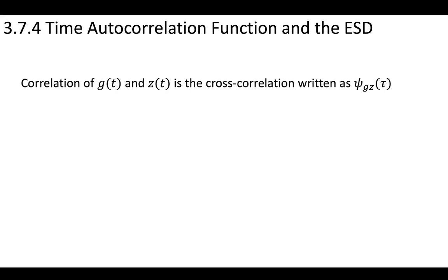Let's consider the time autocorrelation function and its relationship to the energy spectral density. The correlation of a signal in time, g(t), with the signal z(t), we can define as the cross-correlation ψ_gz(τ).